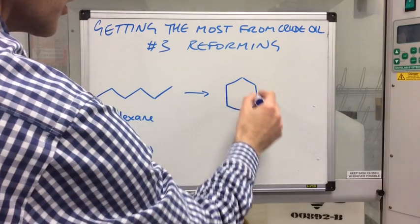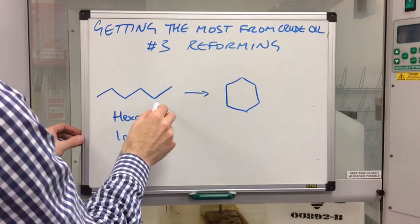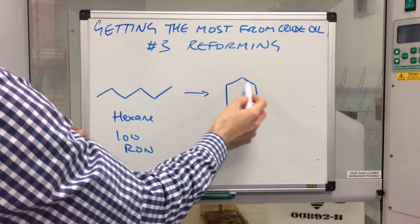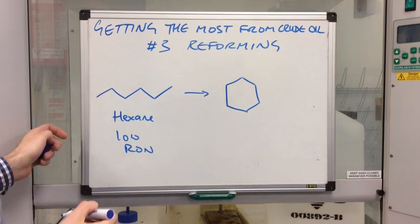Now, if you know your general formula, this is CNH2N plus 2. This is CNH2N. So we've lost two hydrogens.